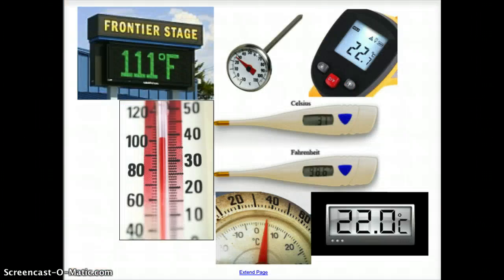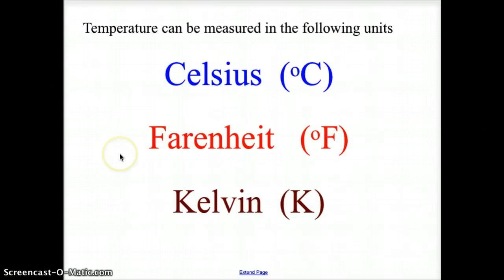Here in the United States we get bombarded with temperature readings in Fahrenheit and Celsius, but there's also a third type of temperature scale used for chemistry called Kelvin. So how do these three very distinct temperature scales relate?